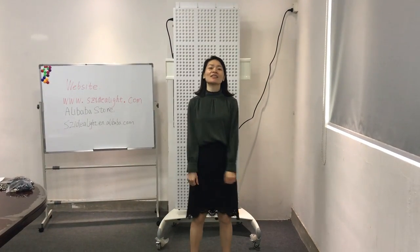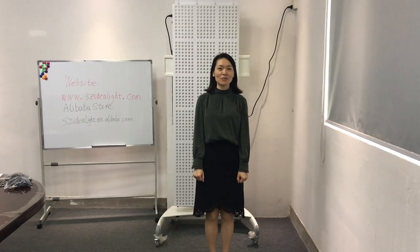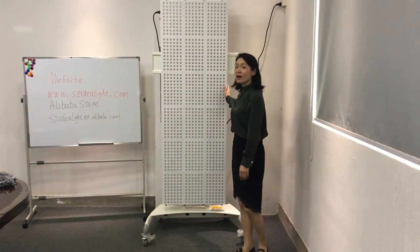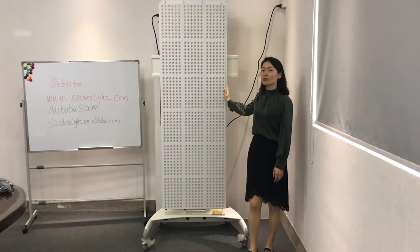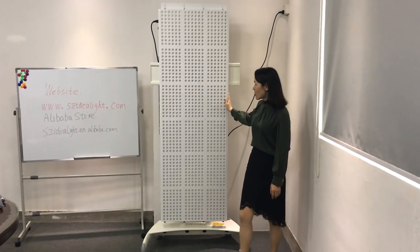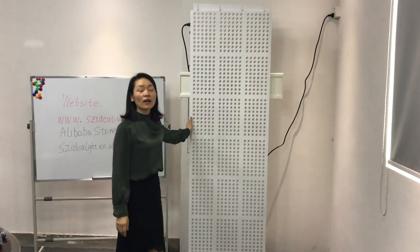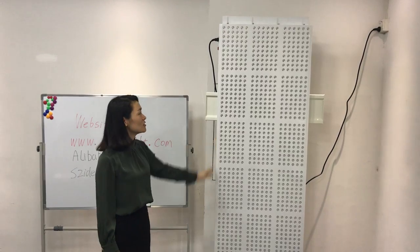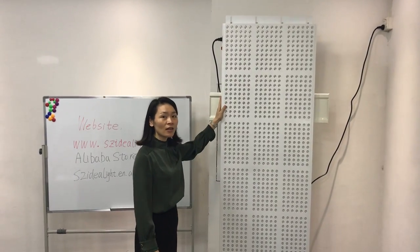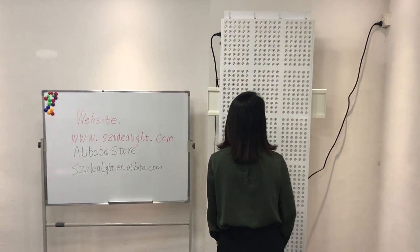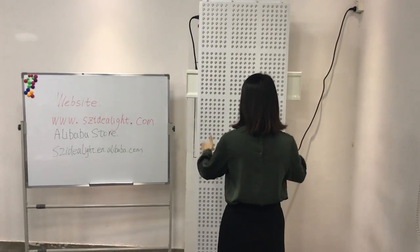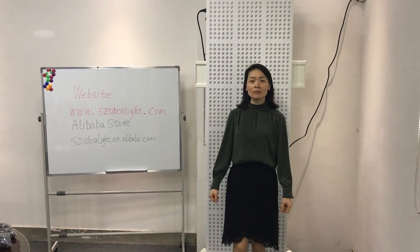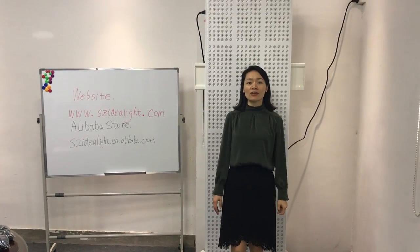Good morning. This is Nicole from Shenzhen Idealight Limited. Today I want to introduce the biggest LED circuit light of my company to you — the TL2000. The height of this device is more than 190 cm. When you switch on this device and stand at the front of it, this device can lighten your whole body totally. I think you will enjoy using this LED circuit light.